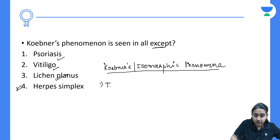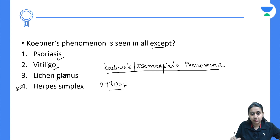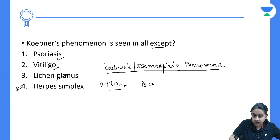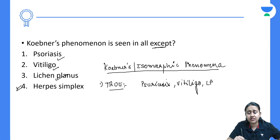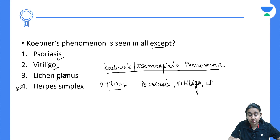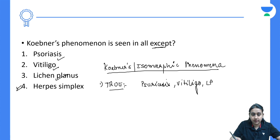We have true Koebner's where the exact pathomechanism occurs secondary to trauma. The classic examples are psoriasis, vitiligo, and lichen planus. Some rarer examples include Darier's disease, Hailey-Hailey disease, lichen striatus, lichen sclerosus, and erythema multiforme.